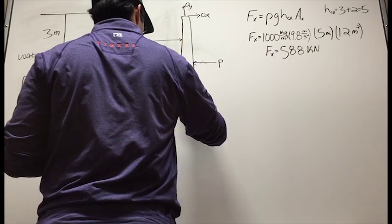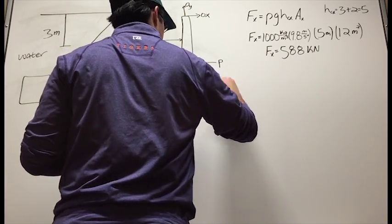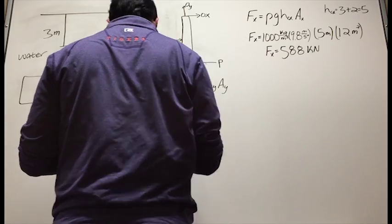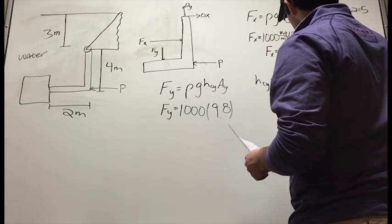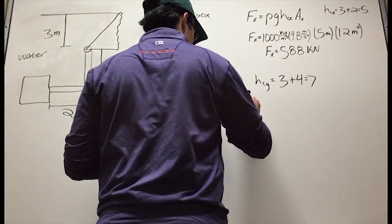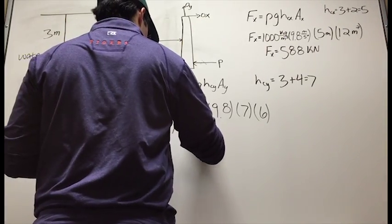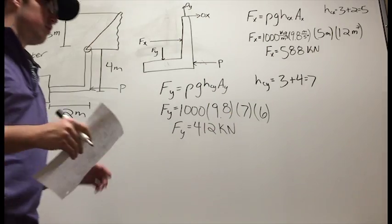To find F_Y, we will follow the same method, except now H_cY will be 7 meters, and the area of the horizontal portion of the gate is 6 meters squared. F_Y equals 412 kilonewtons.